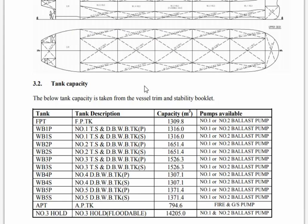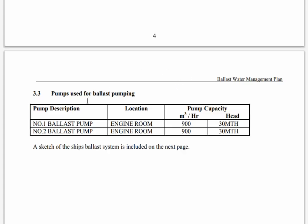You must fill according to this one — what is written here for the ballast tank, you must write this. Don't forget. This is the tank capacity and tank arrangement plan — official capacities in cubic meters. What I recommend: when you join a vessel and make the ballast exchange for the first time, don't use the previous ballast exchange forms for capacity, because the previous officer may have made a mistake. Open the ballast water management plan and fill from here.